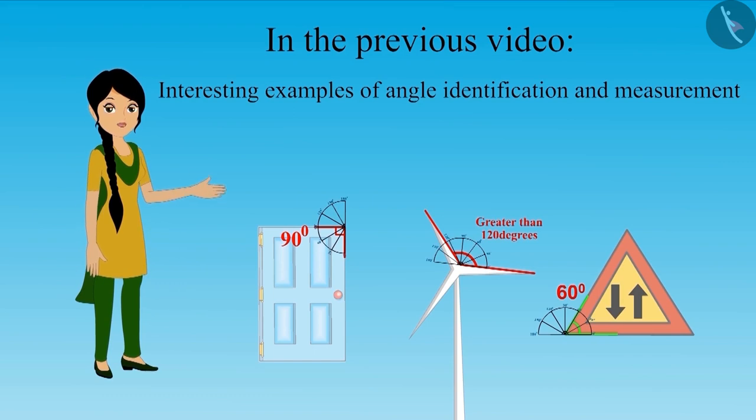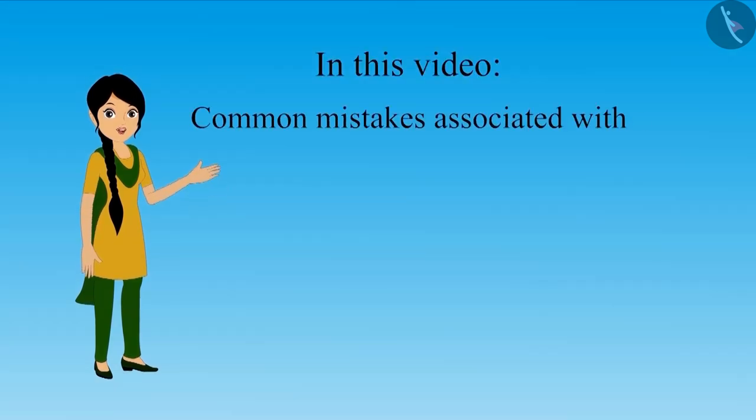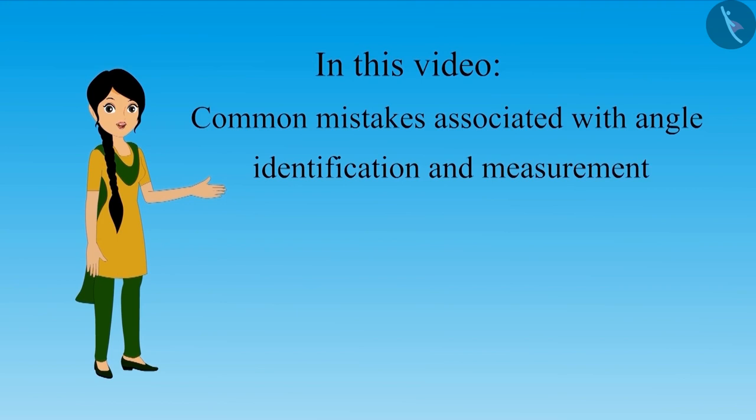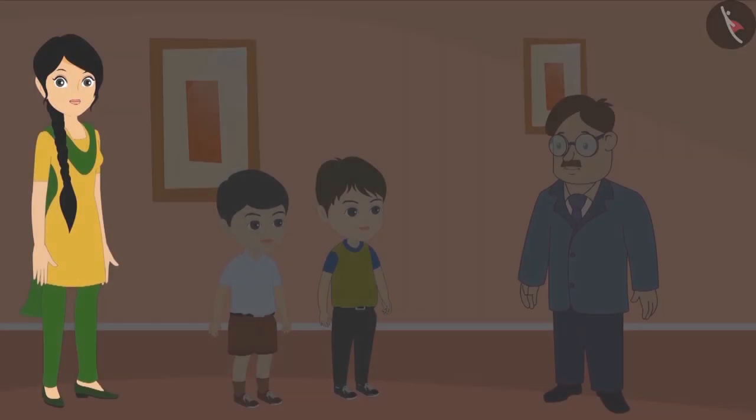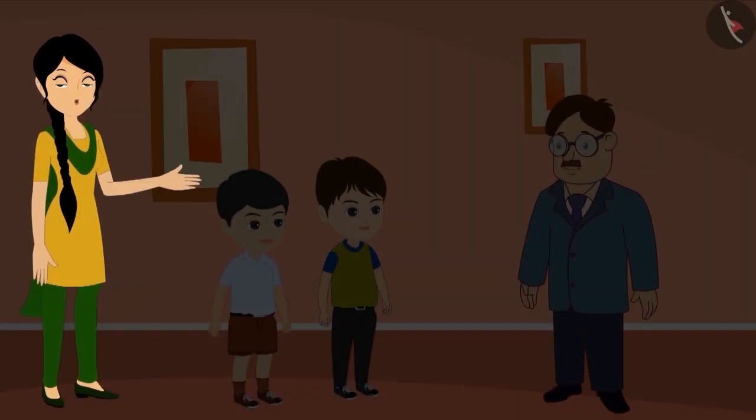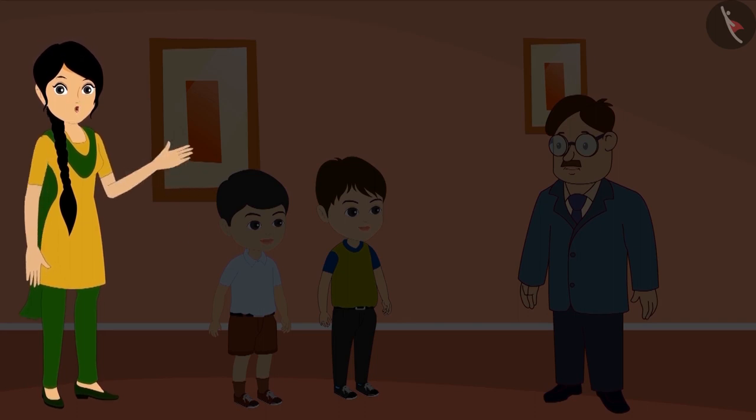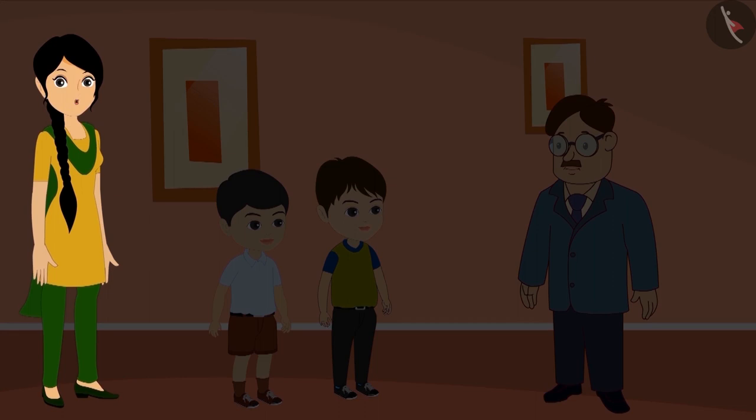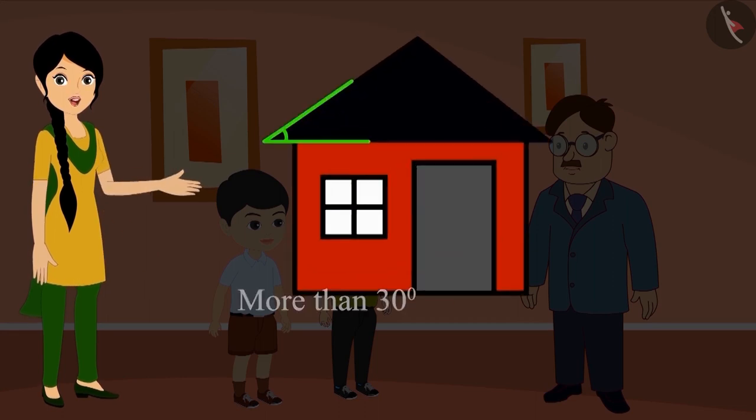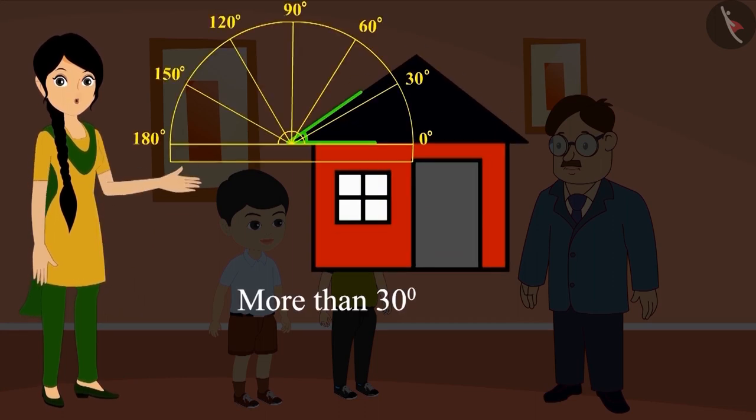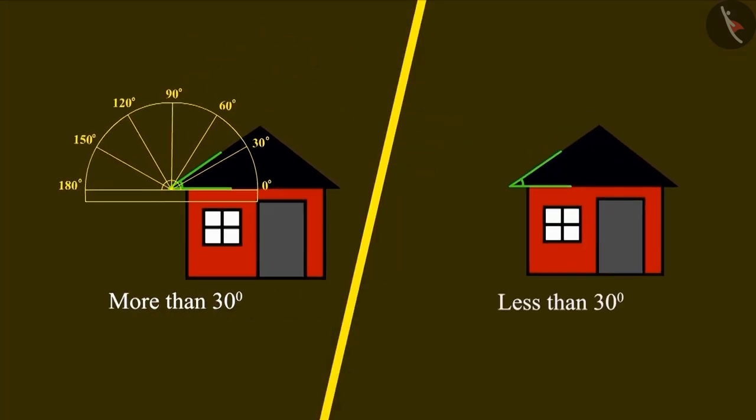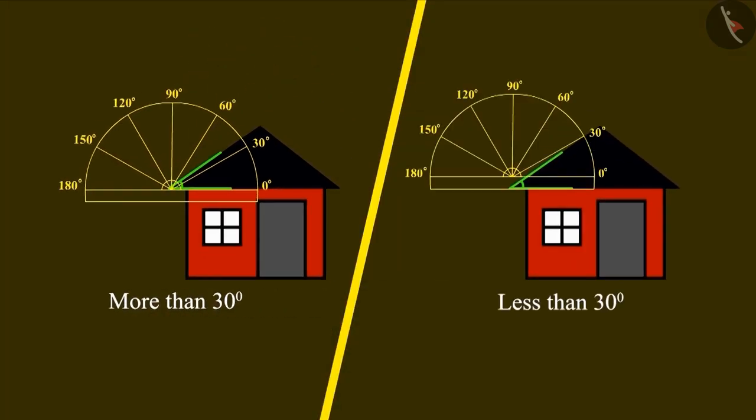In this video we'll see some common mistakes associated with angle identification and measurement. Both Golu and Bholu were trying to solve the same question, but their answers were coming different. According to Bholu, the measurement of this angle is more than 30 degrees and according to Golu, the measurement of this angle is less than 30 degrees.